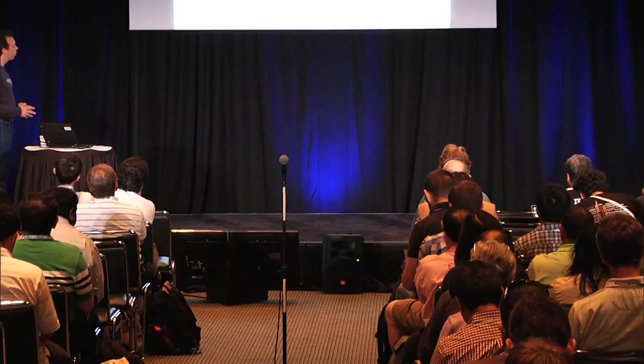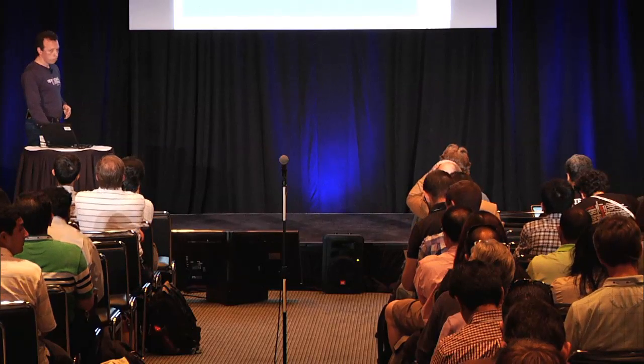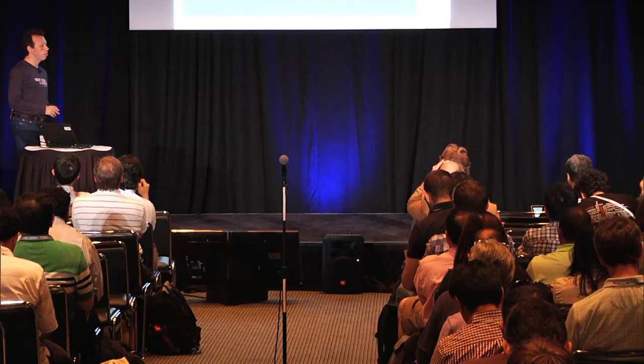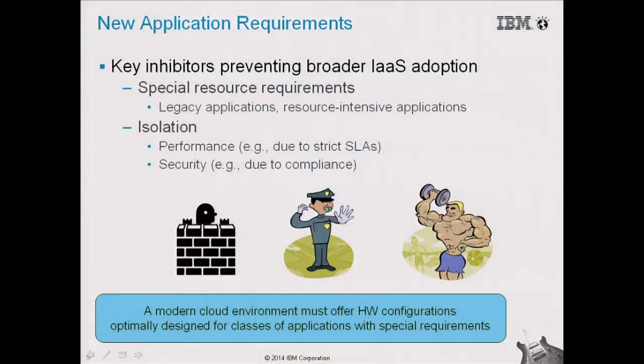There are two things driving heterogeneity in infrastructure. One is the requirements of the application — different applications may run better on different kinds of hardware. The other driver is the evolution over time of the hardware itself. In terms of applications, there are many different kinds of application requirements now coming to the cloud that used to be deployed only in data centers, and there is now a desire to migrate them to the cloud.